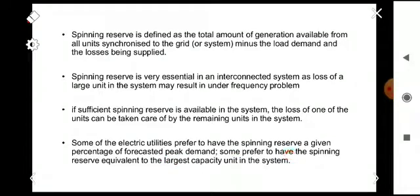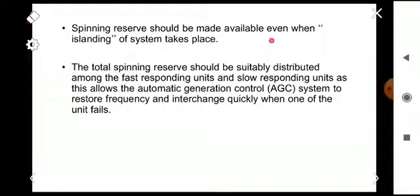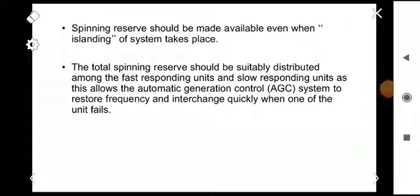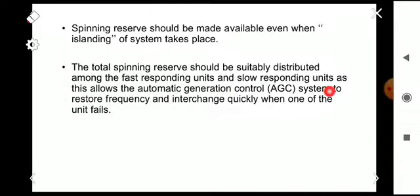Some electric utilities prefer to have spinning reserve as a given percentage of forecast peak demand; others prefer spinning reserve equivalent to the largest capacity unit in the system. Spinning reserve should be available even when islanding of the system takes place. The total spinning reserve should be suitably distributed among fast-responding and slow-responding units, allowing the automatic generation control system to restore frequency and interchange quickly when a unit fails.